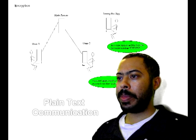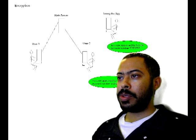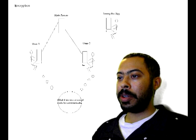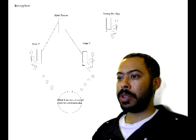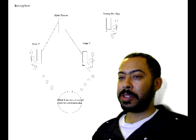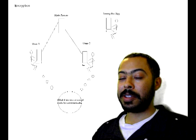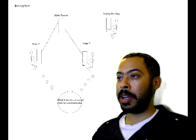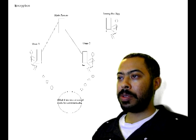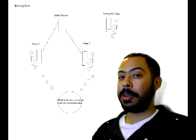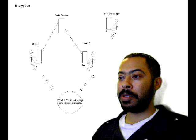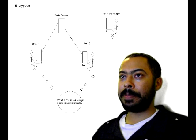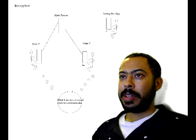So what are they going to do? User 1 and User 2 determine that they're going to use a secret code to communicate. Whether or not they actually believe there's a spy in their network, when passing sensitive information, this is always a good idea. So they collaborate and decide to use a secret code.